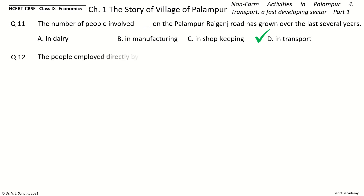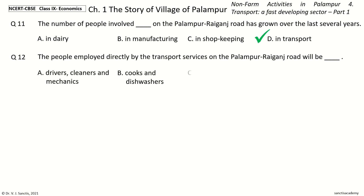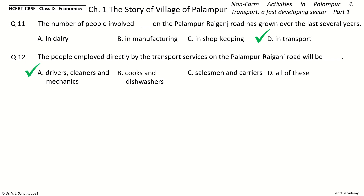Question 12: The people employed directly by the transport services on the Palampur-Raiganj road will be dash. The options are: Drivers, cleaners and mechanics; Cooks and dishwashers; Salesmen and carriers; All of these. And the answer is Drivers, cleaners and mechanics.